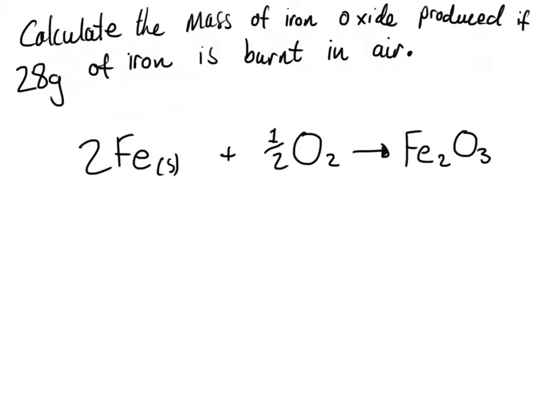In this video I'm going to be showing you an example of how we can go about calculating one of the masses. The question is: calculate the mass of iron oxide produced if 28 grams of iron is burnt in air. So this is the iron — it's 28 grams of this.